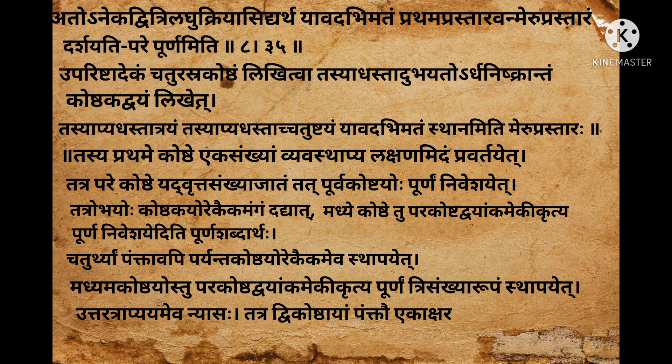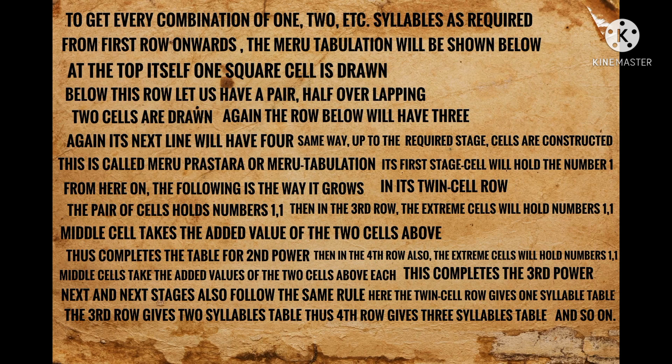Ancient Sanskrit texts always use composite words very frequently. These words need to be broken into individual words properly to obtain the intended meaning. Here is an attempt to translate the above text into English with a proper separation of words. From the step by step construction given so clearly by Halayutha, we get the above pyramid, or Meru in Sanskrit.